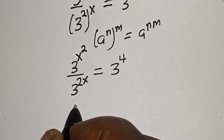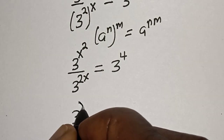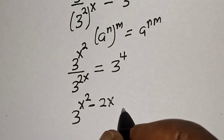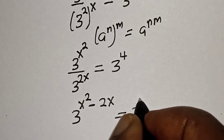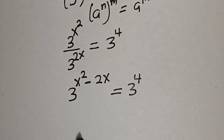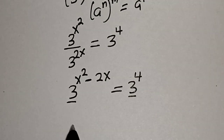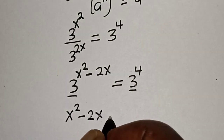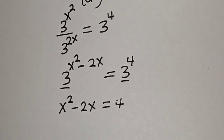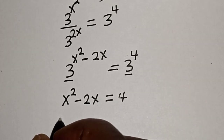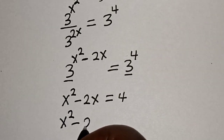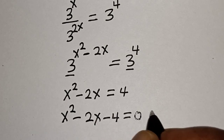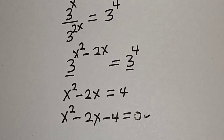This can be written as 3 raised to power x squared minus 2x, is equal to 3 raised to power 4. Since they have the same base, we get x squared minus 2x is equal to 4. Bringing 4 to this side gives x squared minus 2x minus 4 is equal to 0.